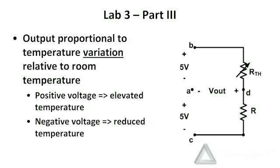In part three of this lab assignment, we're going to revisit our temperature measurement system. Now we're going to require it to give us an output voltage relative to room temperature. If the thermistor temperature goes higher than room temperature, the output voltage should become positive. If the thermistor temperature is lower than room temperature, the output should be negative. And if the thermistor is at room temperature, the output should be approximately zero volts.